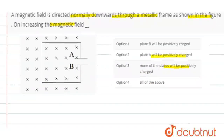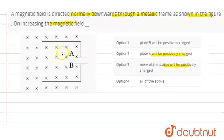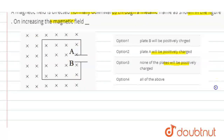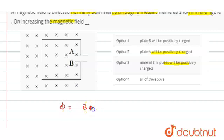Let's see what happens when you change the magnetic field — first, the flux changes. Flux is the number of magnetic field lines passing through any area or loop. The formula is Φ = B·A·cosθ. If you increase the magnetic field, B will increase, and therefore flux will increase.